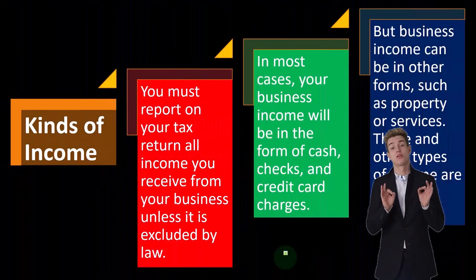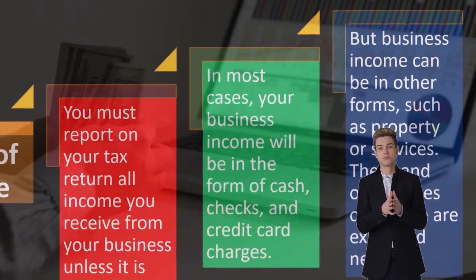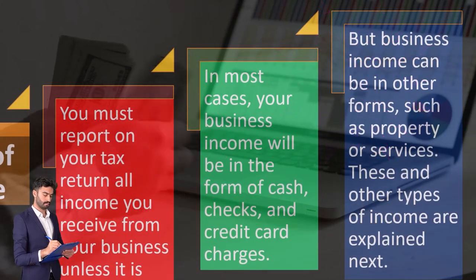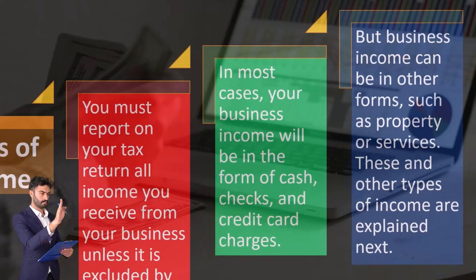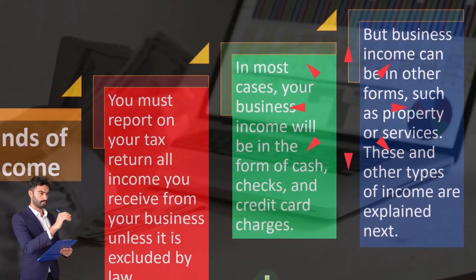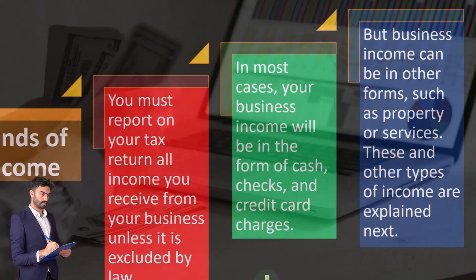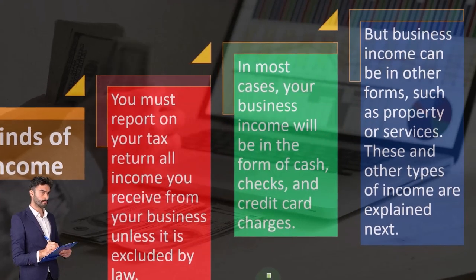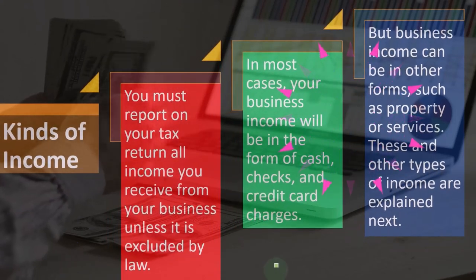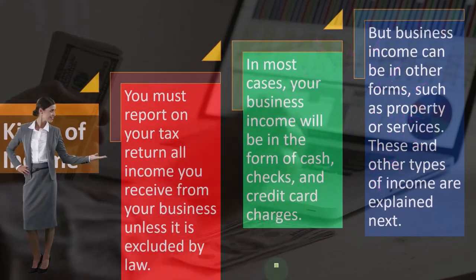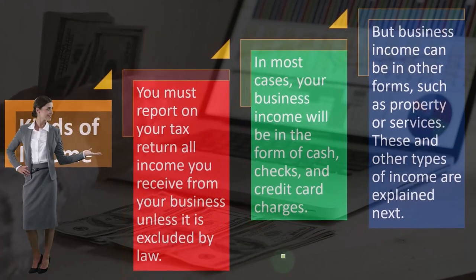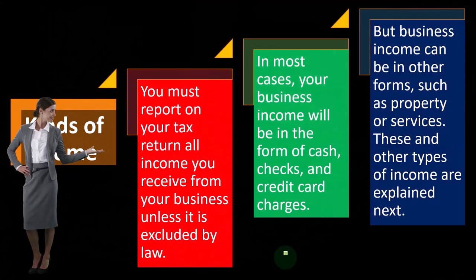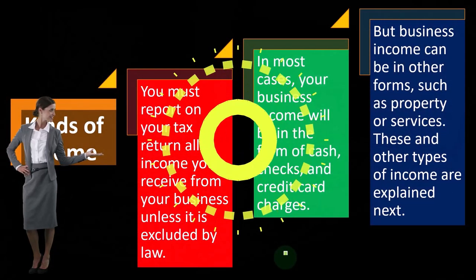But business income can be in other forms such as property or services. People often, because we use cash so much these days, think that if I get something other than cash — I barter, I trade — it's no longer income. That's not true. You still got paid and you have to figure out what the income is, although it's less trackable and less easy to determine the dollar amount since you're no longer using cash to facilitate the transaction. You can trade and that might work in certain situations.